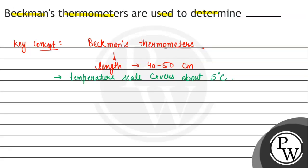And this scale divides into 100ths of a degree. Meaning, the least count of temperature change is 0.001 degrees Celsius.